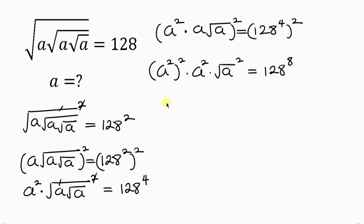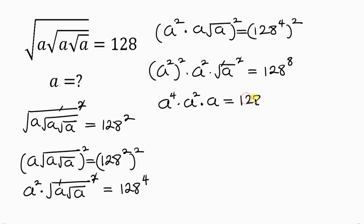Taking the square of both sides: on the left we have A squared raised to the power of 2, times A raised to the power of 2, times A squared. This square cancels out the square root, leaving behind A, to be equal to 128 raised to the power of 8.